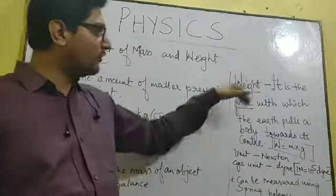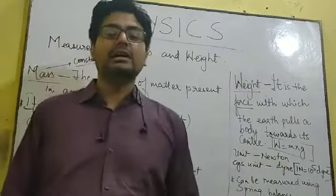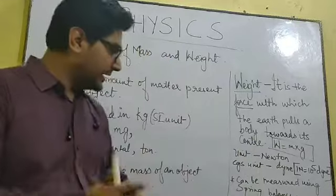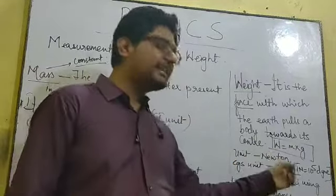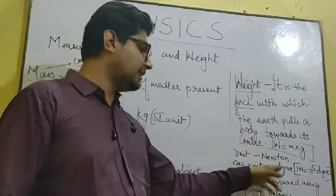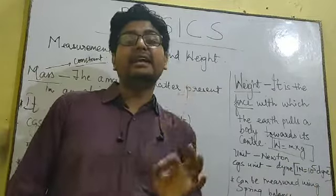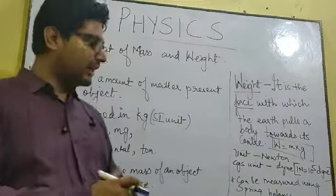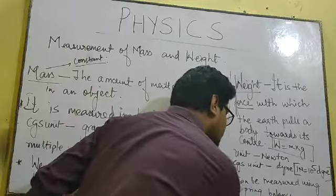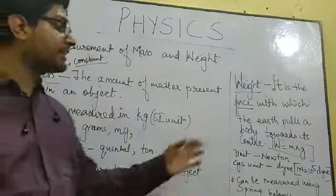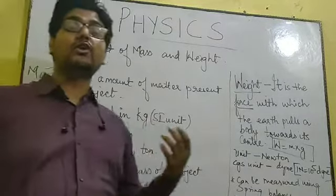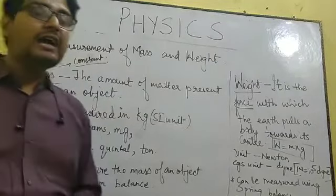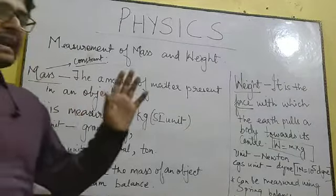The SI unit of weight is Newton, since weight is a force. In the CGS system, the smaller unit is dyne, and one Newton equals 10 to the power of 5 dynes. We can measure the weight of an object using a spring balance. So: spring balance is used to measure weight, and beam balance is used to measure mass.